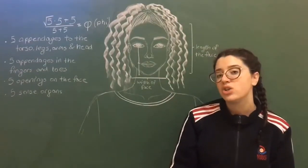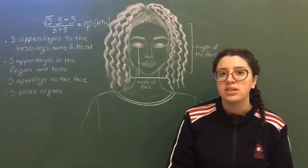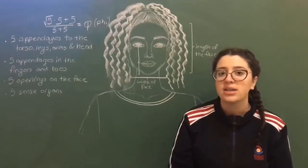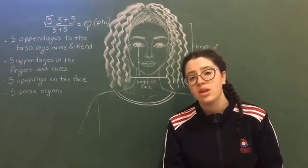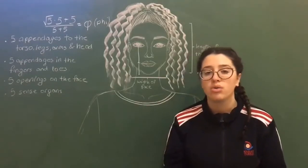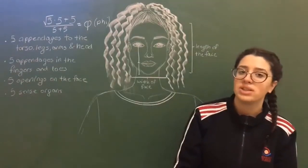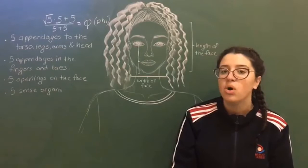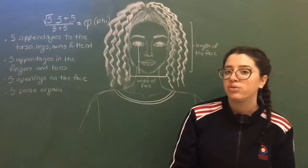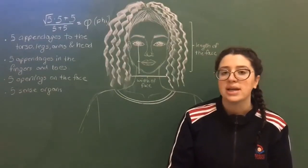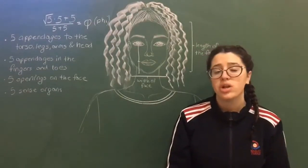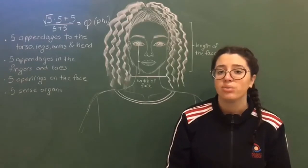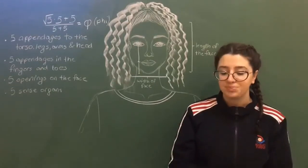The golden ratio was used by many artists, many architects, and more in their work of art. For example, Leonardo da Vinci used the golden ratio for the Mona Lisa. The golden ratio is also the basis of modern architecture.